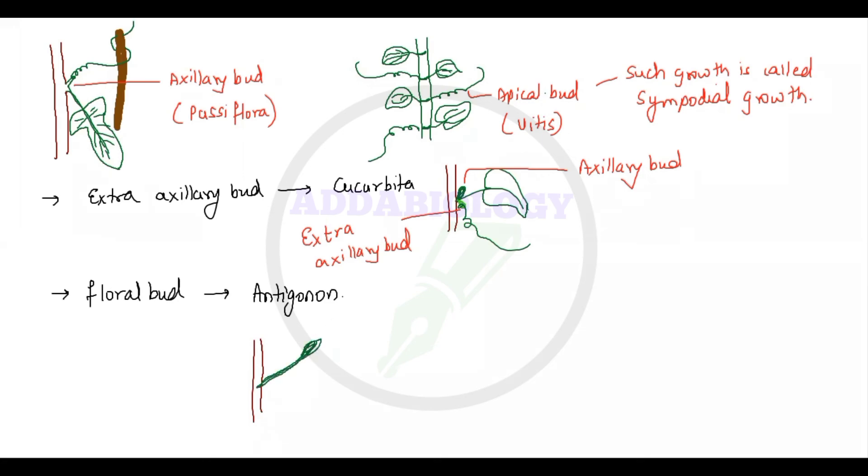Sometimes the floral bud — the bud that normally develops into a flower — will modify into a tendril. An example of this is Antigonon, which is one of the most important examples of this type of tendril modification.